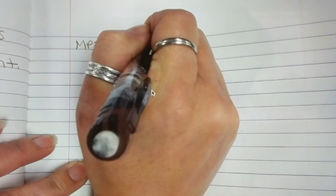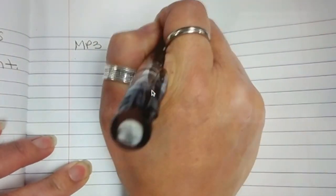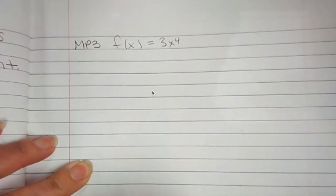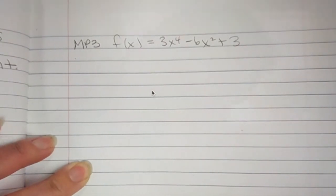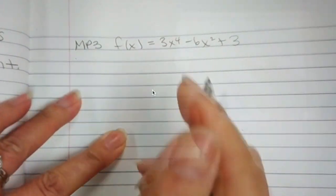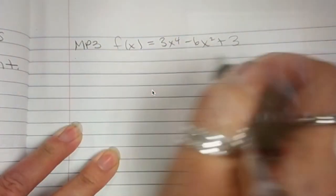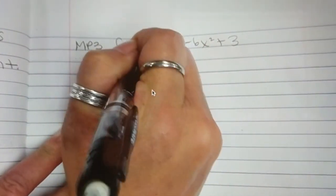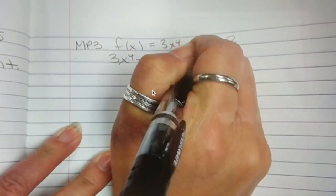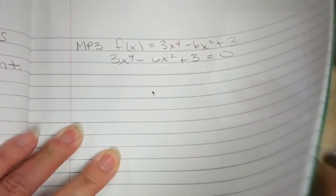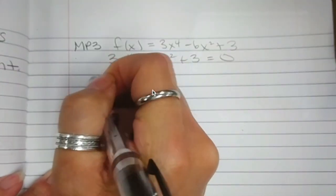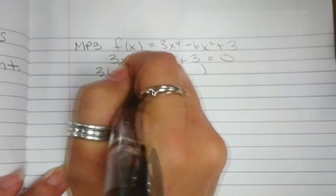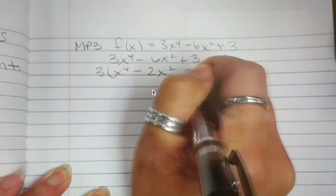Here we are with monitoring progress 3. F of x equals 3x to the 4th minus 6x squared plus 3. It asks you to find the zeros. Okay. Let's have it equal zero. I like to have my zero on the other side. Doesn't matter. Okay. First step. GCF. 3.